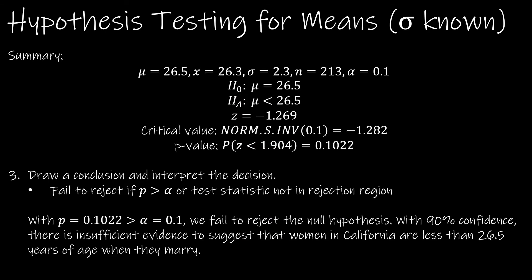So here's our conclusions. All of the summary things that we've already found. To draw a conclusion, we are going to say with p greater than alpha, we fail to reject the null hypothesis. Or if you're using the rejection region, you can say with negative 1.269 greater than the rejection region, negative 1.282, we fail to reject the null hypothesis.